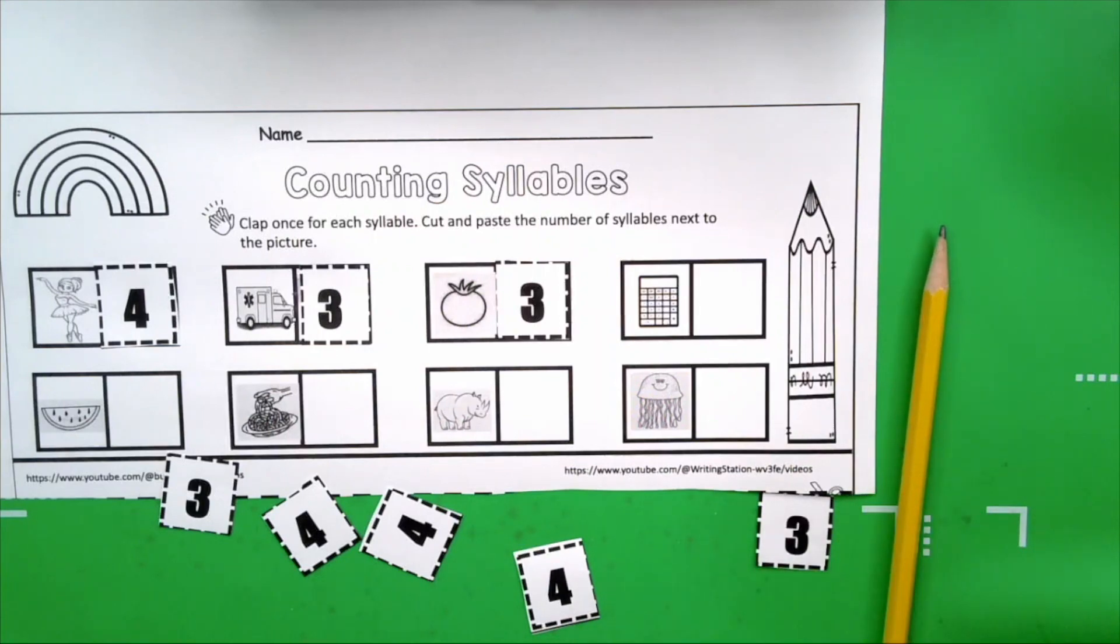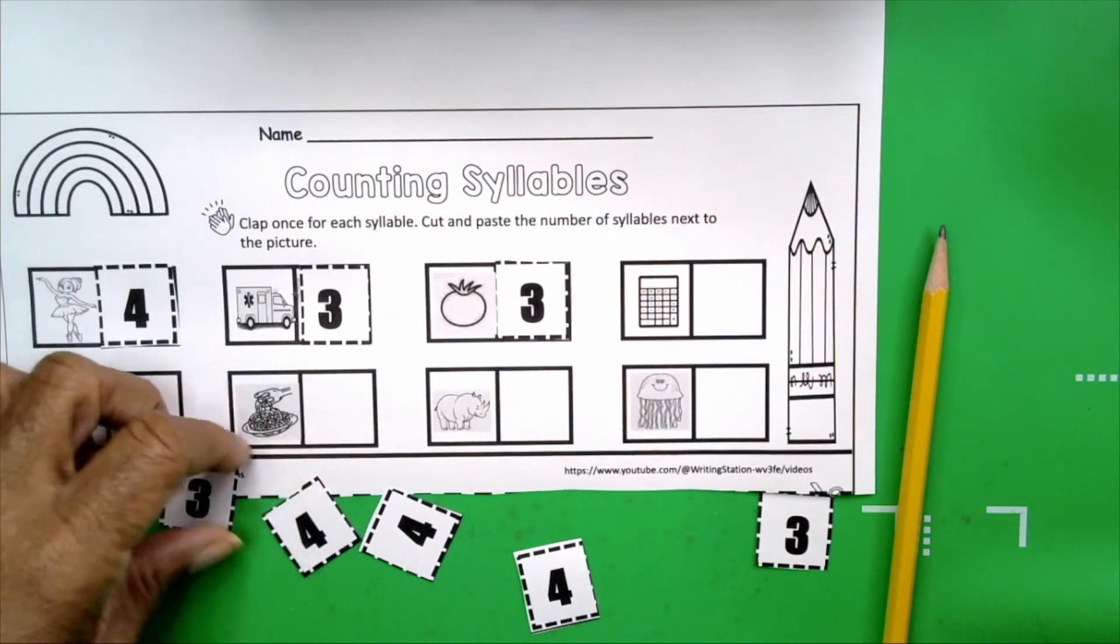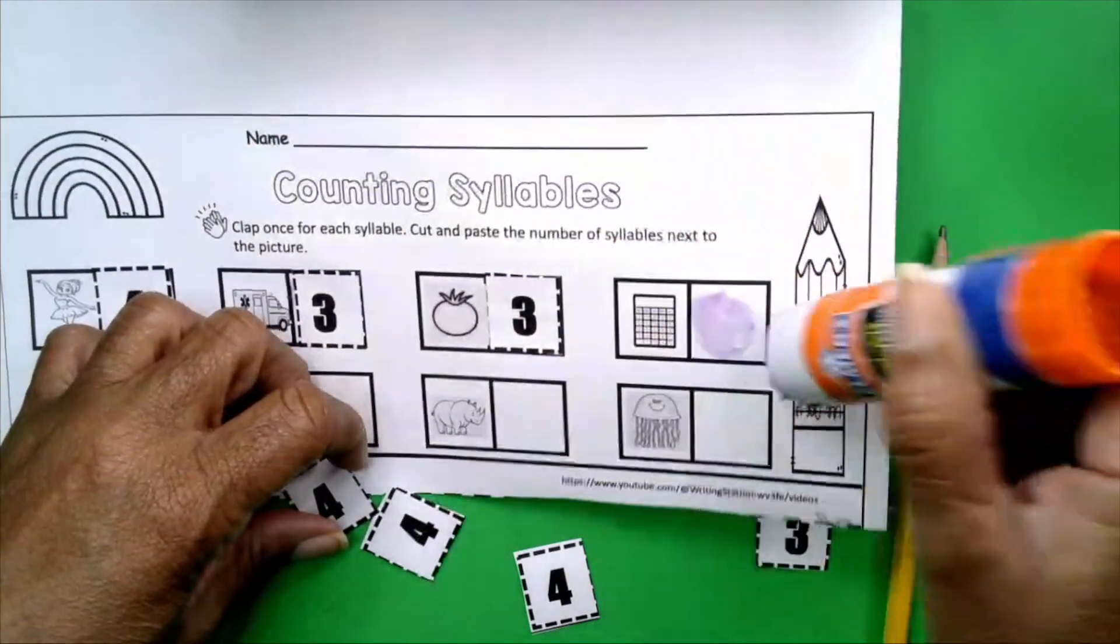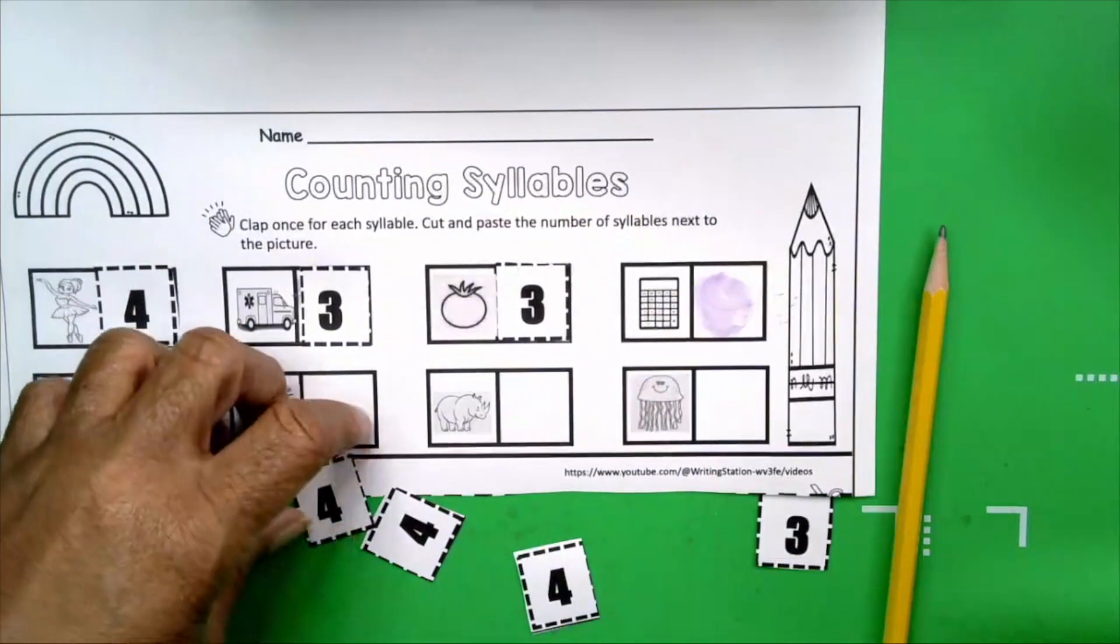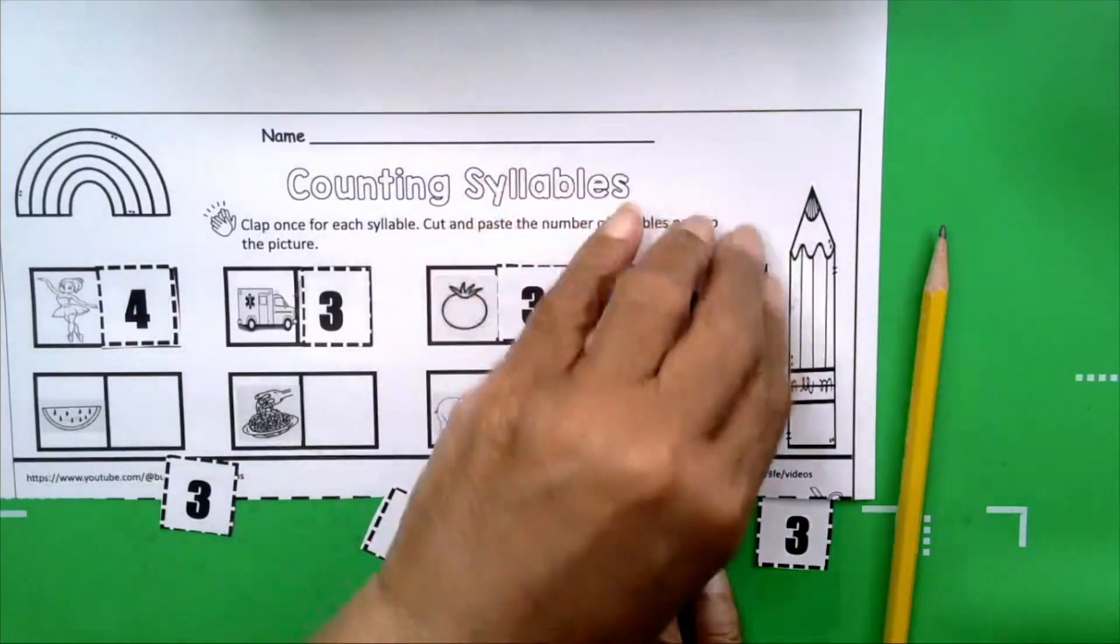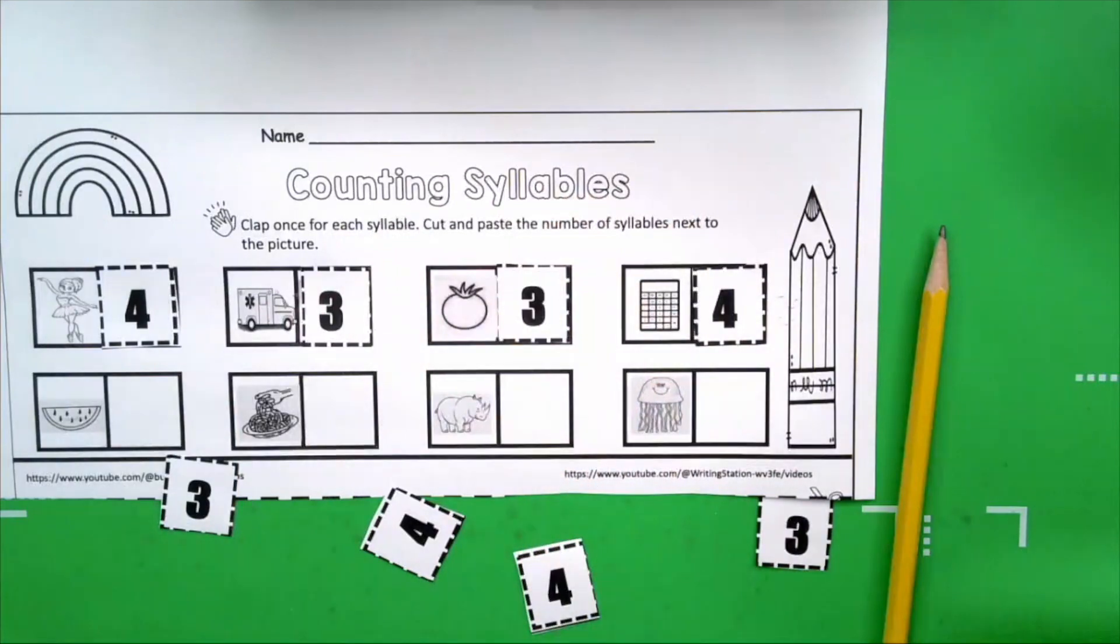Calculator. Get your hands ready. Calculator. How many claps? Four. How many syllables are in calculator? Four. Very good. Four.